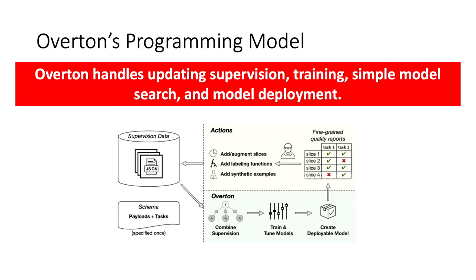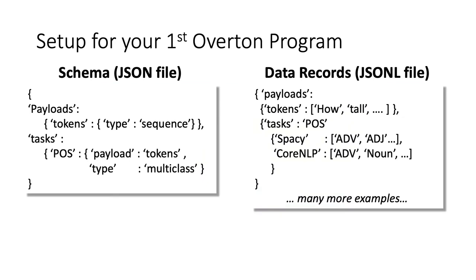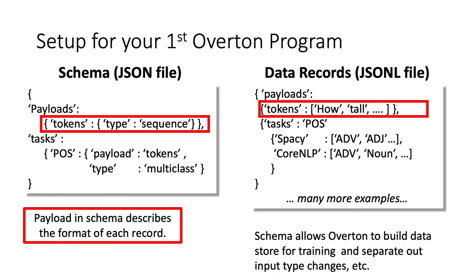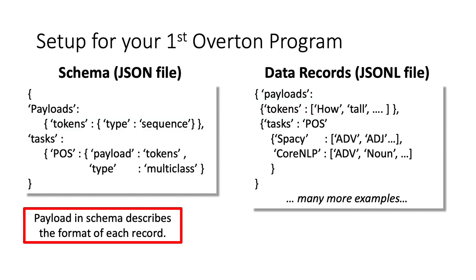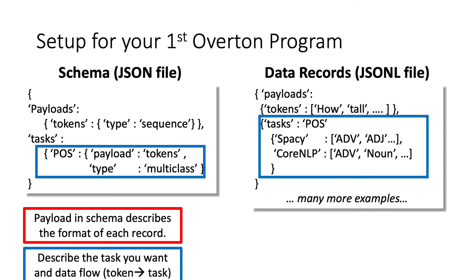Now let me give you an example of Overton and why something simple can meet these goals. Overton handles updating supervision, training, simple model search, and model deployment. Here are two inputs to Overton: a schema file and a bunch of data records — think of them as millions of records conforming to the schema. The payload element says there are tokens, telling Overton each example may have a field called 'tokens' interpreted as a sequence. This is enough for Overton to build a row store for training, build Go bindings for inference, and more. The second field is the task — here, multi-class classification.